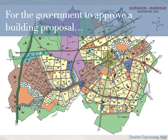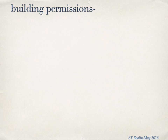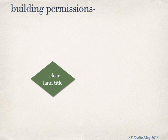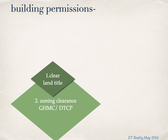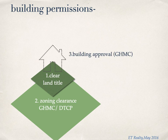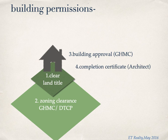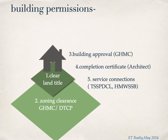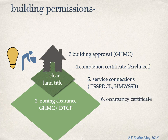Since the state now controls all the land within its territory, it requires a formal procedure to get approval for a building proposal. First, we need to have a clear title of the land. Then you need to get clearance whether the land you hold is coming under the correct zone for the development that you are proposing. You then apply to the respective authority for building approval. Once the building is complete, you apply for a completion certificate. With the completion certificate, you can get service connections like electricity and water. Once these connections have been made, you finally get the occupancy certificate, which makes it legal for people to actually use your building.